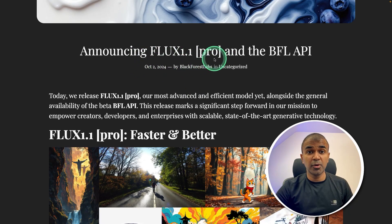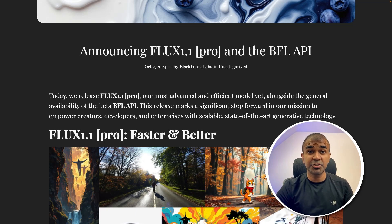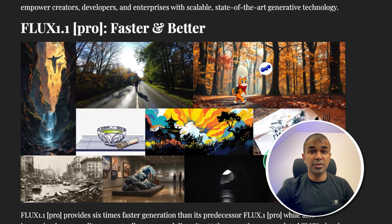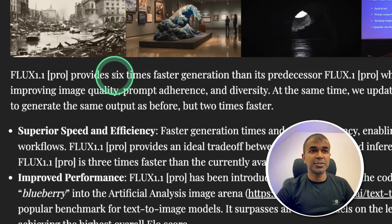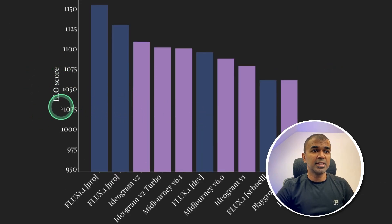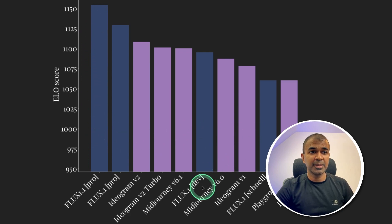Flux 1.1 Pro got released. This is one of the top performing, best text-to-image generation models right now. You can see stunning images created by this model — it's fast and better, able to generate images six times faster than its predecessor Flux 1. The Flux 1.1 Pro is top in the ELO score list, compared with Midjourney, Ideogram, and the previous version of Flux.